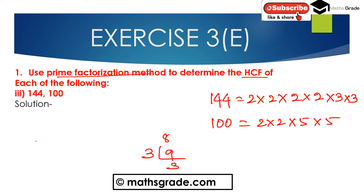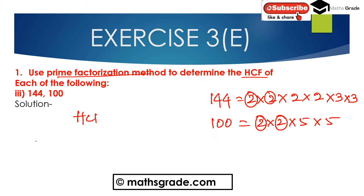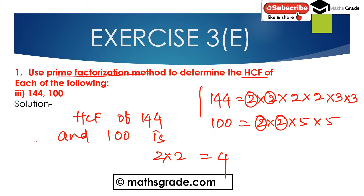Now find out the HCF, highest common factor, of 144 and 100. Between 144 and 100, both have 2 × 2, that is 4. There is no common factor of 3 and 5, so the highest common factor of 144 and 100 is 2 × 2, that is 4. So the highest common factor of 144 and 100 using the prime factorization method is 4.